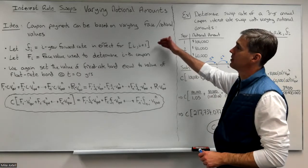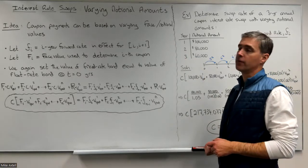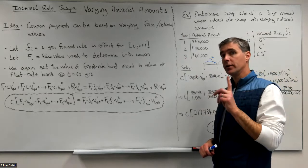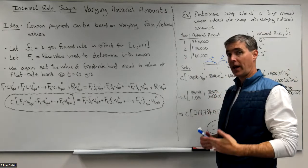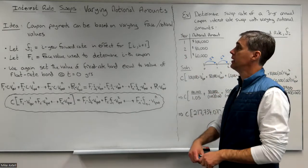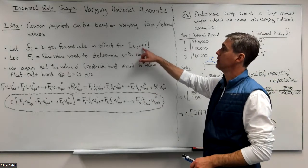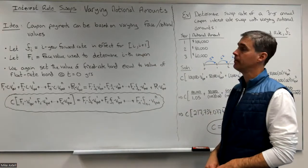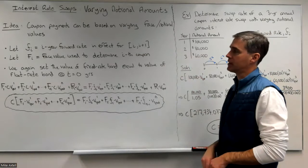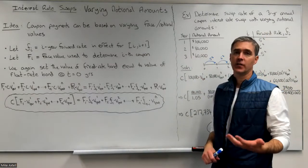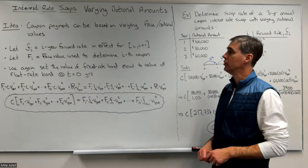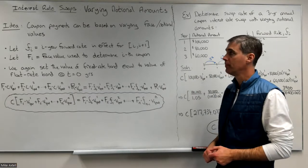Please remember that little f sub i is the i year forward rate. This is a one year interest rate established at time zero to be in effect from time i to one year later, i plus one. Capital F sub i is going to be the face value or the notional amount used to determine the i coupon.